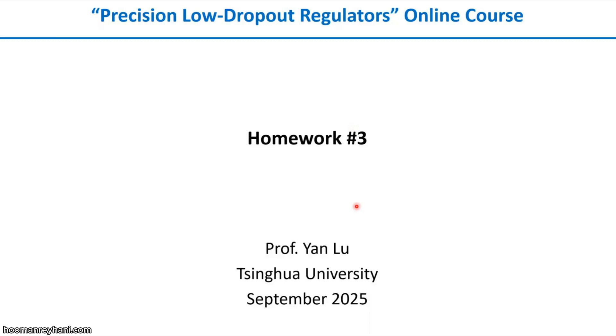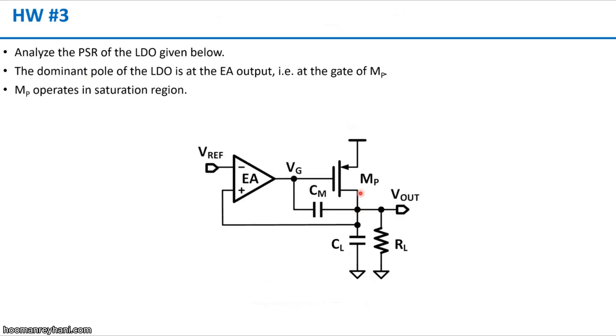Hello everyone, this is Yanlu from Tsinghua University, and this is the solution for homework 3. In this homework, we want to analyze the PSR of the LDO with a Miller compensation, and the dominant pole is at the gate of the power transistor or at the EA output, and we assume the power transistor operates in saturation region.